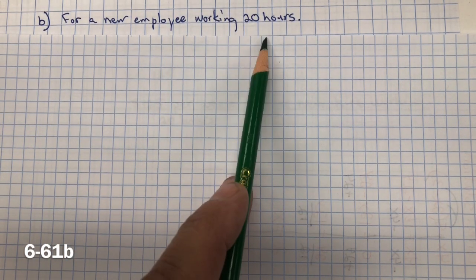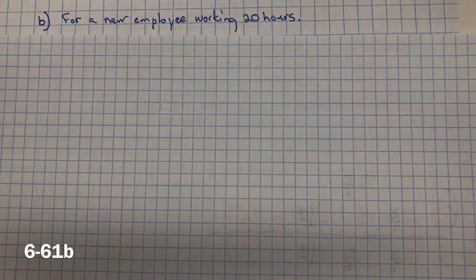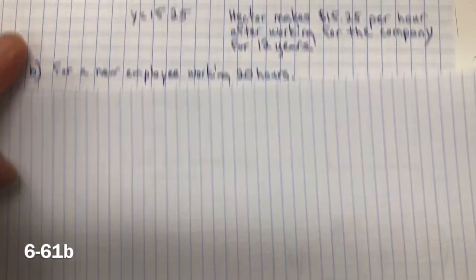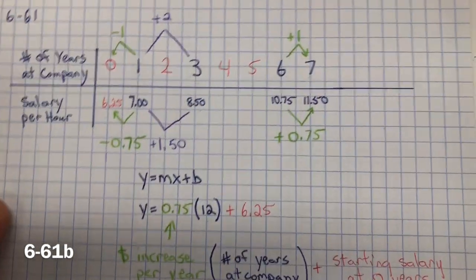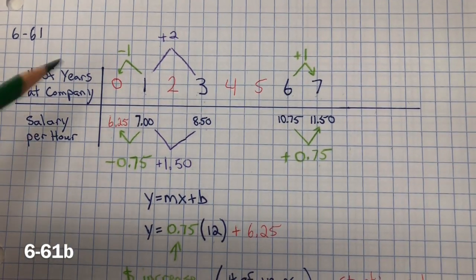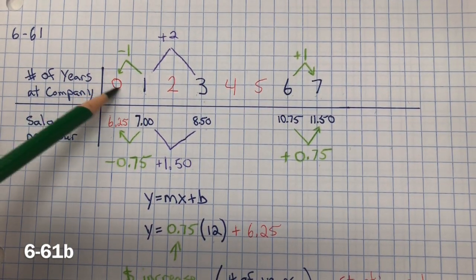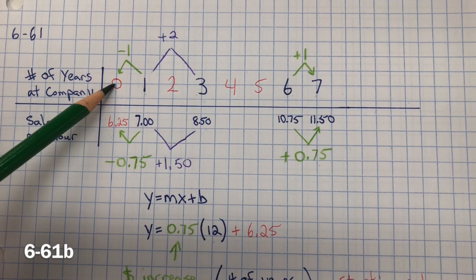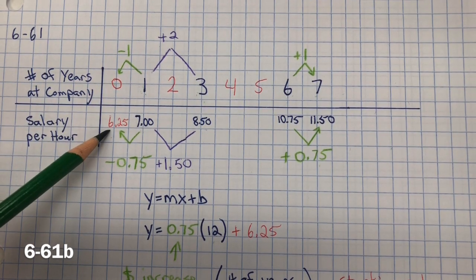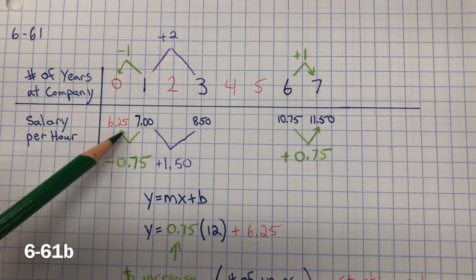So for the new employee working 20 hours, he's just starting. If I go back up to my table, for zero years at the company, they're just starting. That person would be making $6.25.